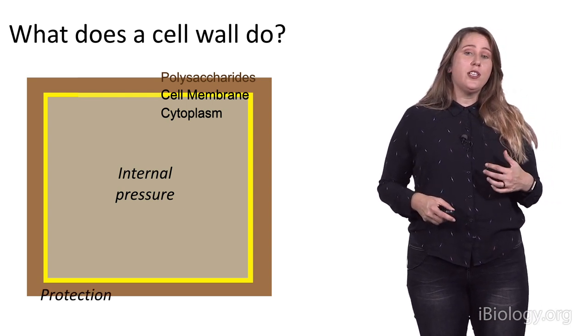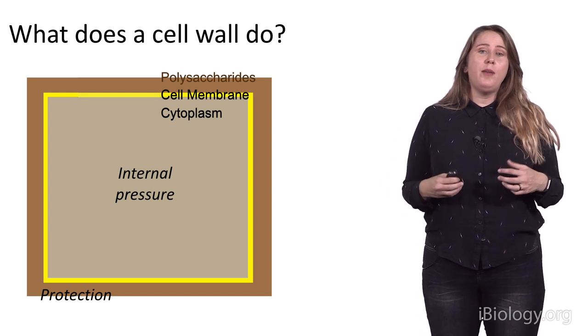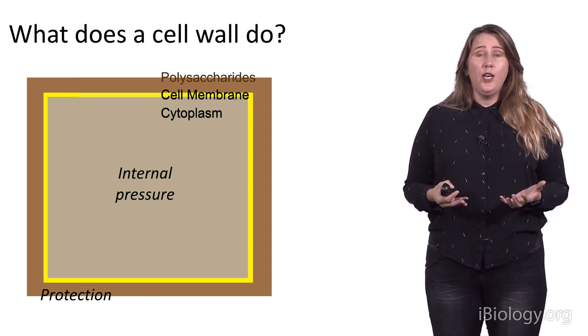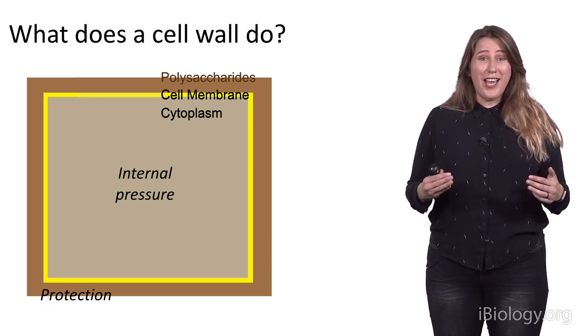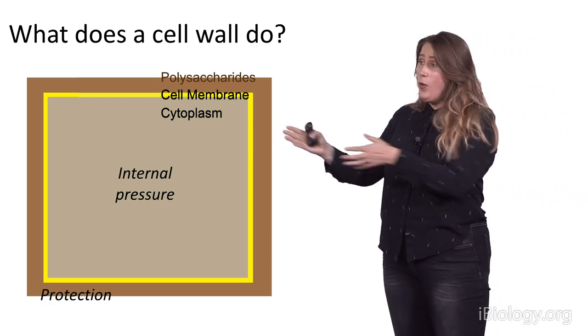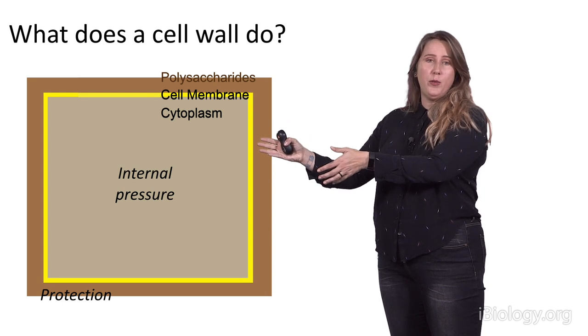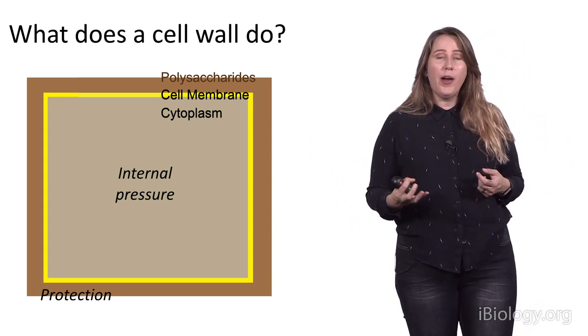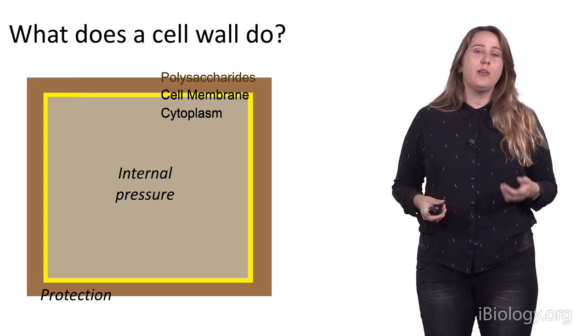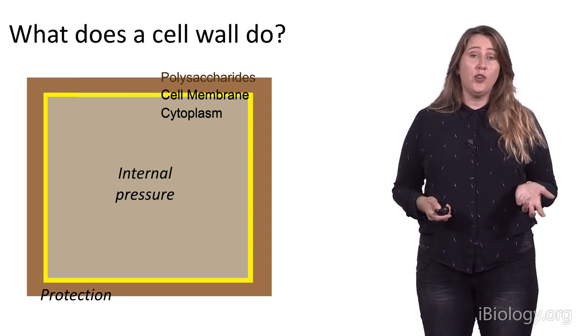The cell wall doesn't just allow for that internal pressure to build up, but it also provides protection. Imagine you were an herbivore or some kind of fungus that was trying to enter inside this plant cell wall. Well, what's in that material might stop you from doing that, either because it doesn't taste good or it physically hurts your mouth parts. And so, plant cell walls can provide a lot of protection to the internal contents.